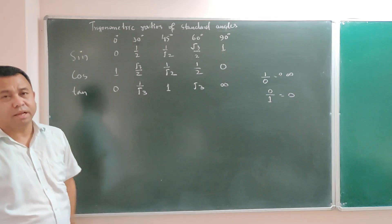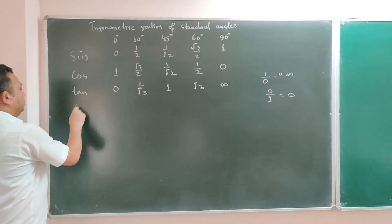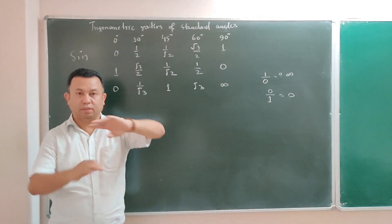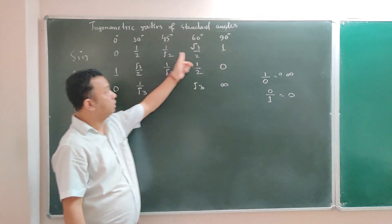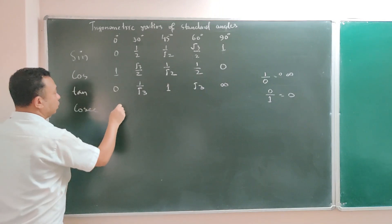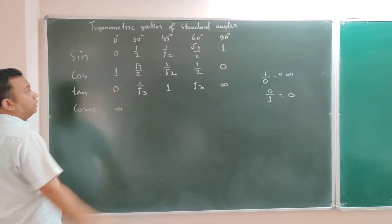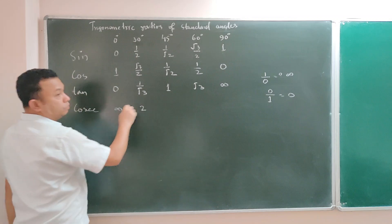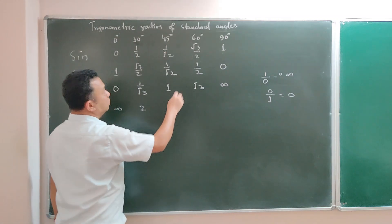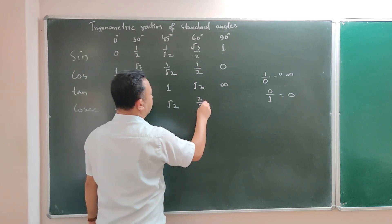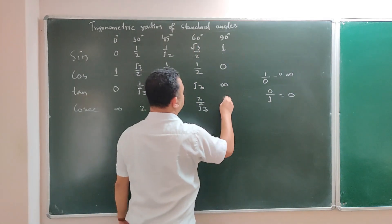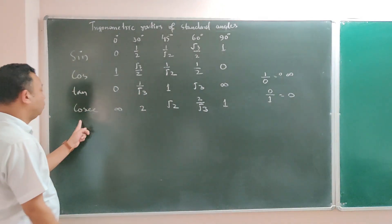You have sin, cos, and tan. Similarly for cosec: cosec is the reciprocal of sin. So whatever values you have written for sin, you reciprocate them. Cosec 0° is undefined (reciprocal of 0). 1/2 becomes 2. 1/√2 becomes √2. √3/2 becomes 2/√3. And the reciprocal of 1 is 1. This is the value of cosec.